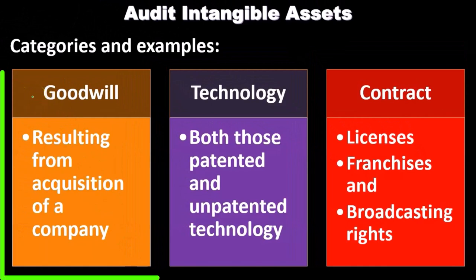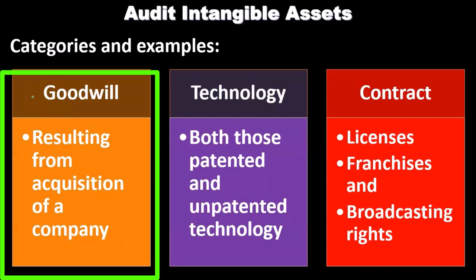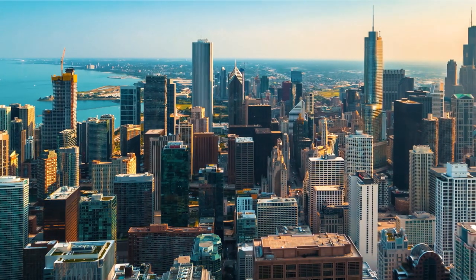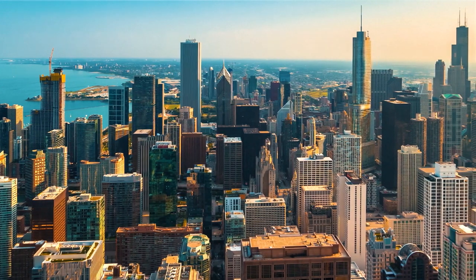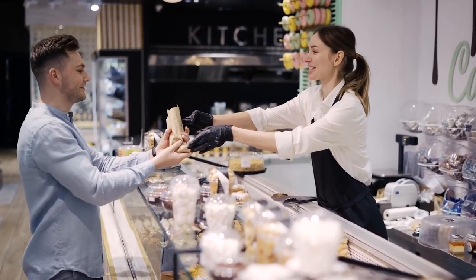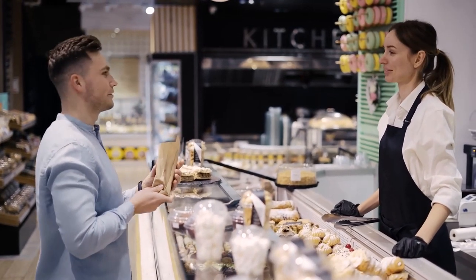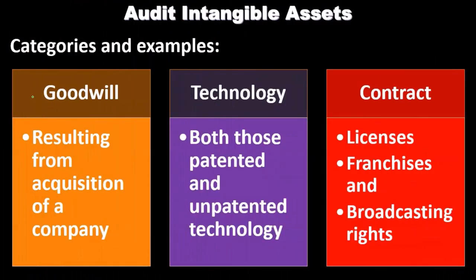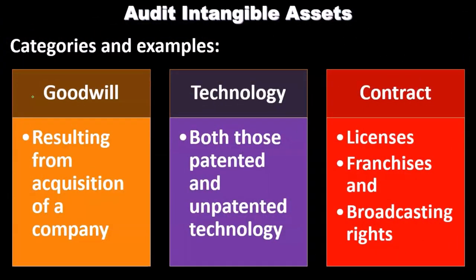More categories include goodwill resulting from an acquisition of a company. When we acquire a company, the value is essentially assets minus liabilities, which equals the equity section. You would think that's what we'd pay — but oftentimes a company pays more than the book value. The assumption is there are intangible assets such as the brand name, and that excess payment results in goodwill. Goodwill is typically recorded only when a purchase transaction occurs, and we must somehow value it if it's on the financial statements.